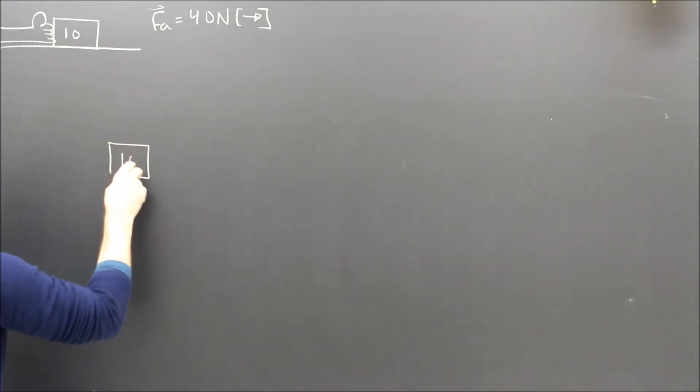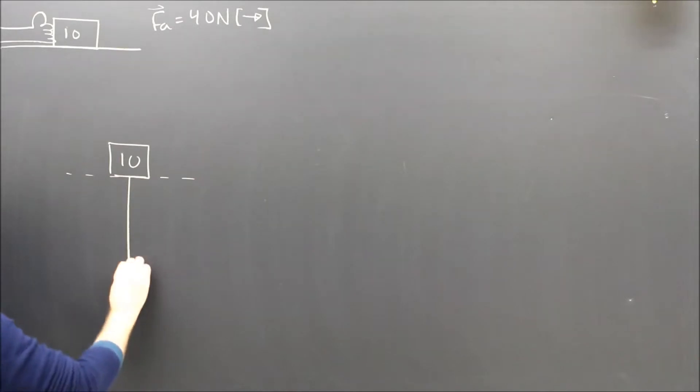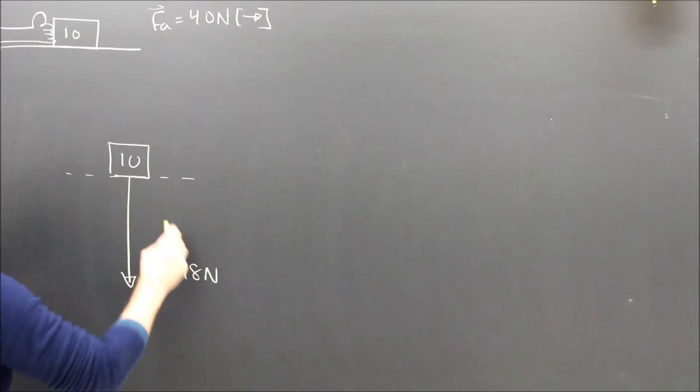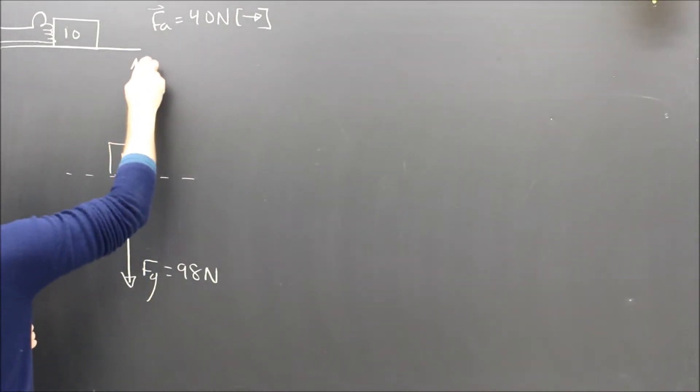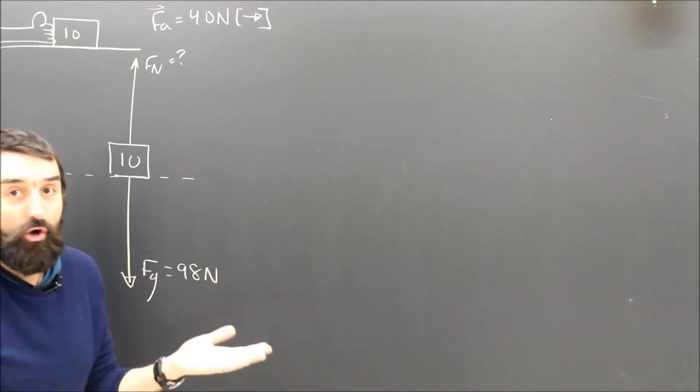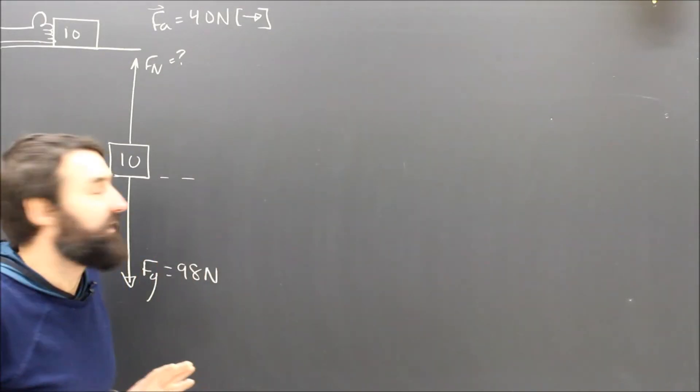Here is my 10 kilogram object. What forces are there? Of course there's gravity on it which is 98 newtons down. It's resting on a surface so there's FN which is up. How big is FN? I do not know because I haven't finished my free body diagram.